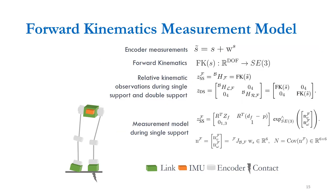For the measurement model, noisy encoder measurements are used to compute the relative kinematics between the base link and the support foot through the forward kinematics map during single and double support. These observations relate directly to states corresponding to the base pose and foot pose. The noise affecting the relative poses is related to the encoder noise through the manipulator Jacobian J. For relevant Jacobian computations of the prediction and measurement models, please refer to the paper.